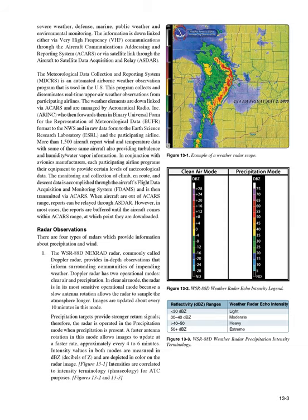The AIRMET mountain obscuration section covers Maine, New Hampshire, Vermont, Massachusetts, and Pennsylvania, with mountain obscuration by clouds, precipitation, and mist. Conditions continue beyond 0200Z through 0800Z. Within an area bounded by Caribou, ME to St. John's, New Brunswick, to 150 nautical miles east of Nantucket, MA, to Newark, NJ, to Ottawa, Ontario, to Caribou, ME, the affected area will experience ceilings below 1,000 feet/visibility below 3SM, precipitation/mist. Conditions will continue beyond 0200Z through 0800Z.